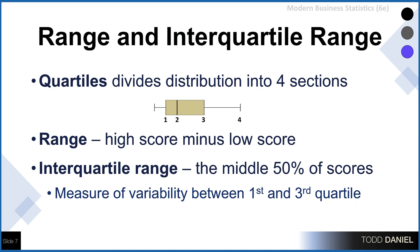In measures of variability, we started with the range and the interquartile range. We begin by dividing our distribution into four sections, with 25% of the scores in each section. The range is the highest score minus the lowest score in our distribution, but the range is highly susceptible to outliers. So another measure we can use is the interquartile range — the variability between the first and third quartiles, or the middle 50% of the scores — which is a much more reliable measure of variability, especially when we have outliers in our dataset.